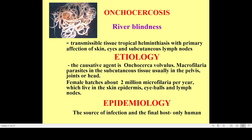Onchocerciasis — the second name is river blindness — is a transmissible tissue tropical biohelminthiasis with primary affection of skin, eyes, and subcutaneous lymph nodes.